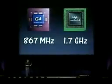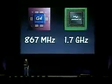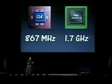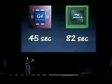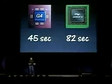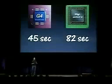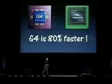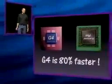In our showdown, we've got an 867 MHz G4 against the 1.7 GHz Pentium 4. The G4 completed the task in 45 seconds. The Pentium 4 took 82 seconds for the same exact task. That means the G4 at this task is 80% faster than a 1.7 GHz Pentium.